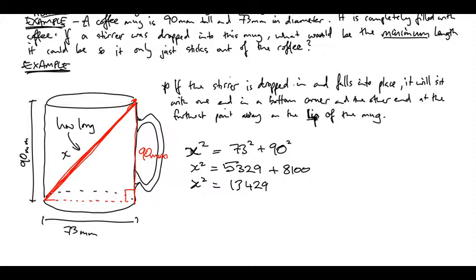And then what is the opposite of squaring something? Square root. So you just need to square root 13429 to get what X is. And it will be 115.88 millimeters, that's to two decimal points.